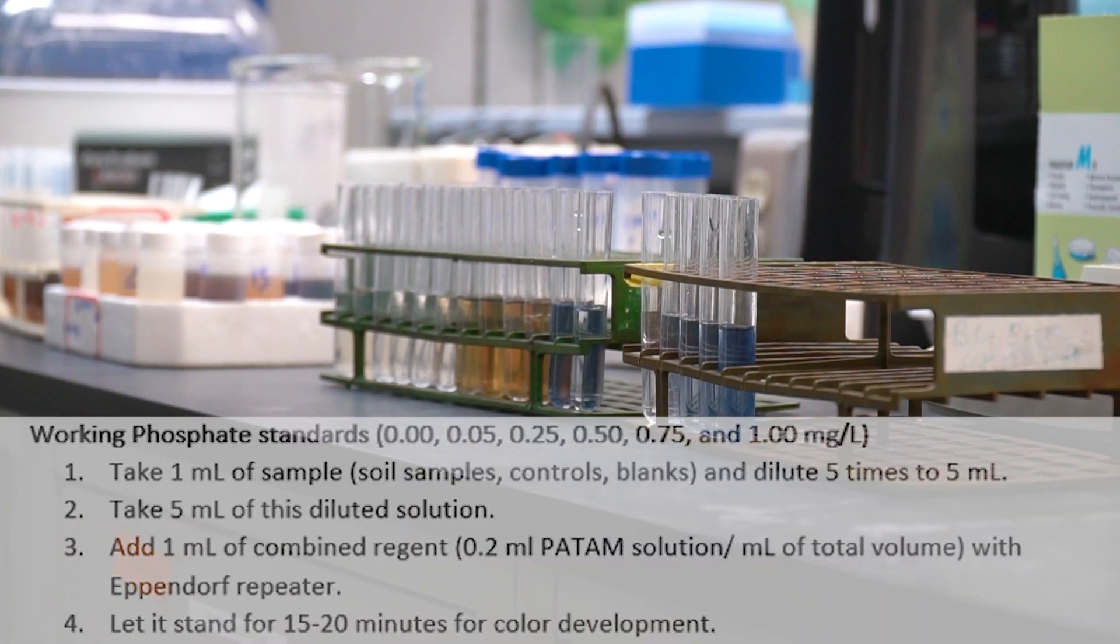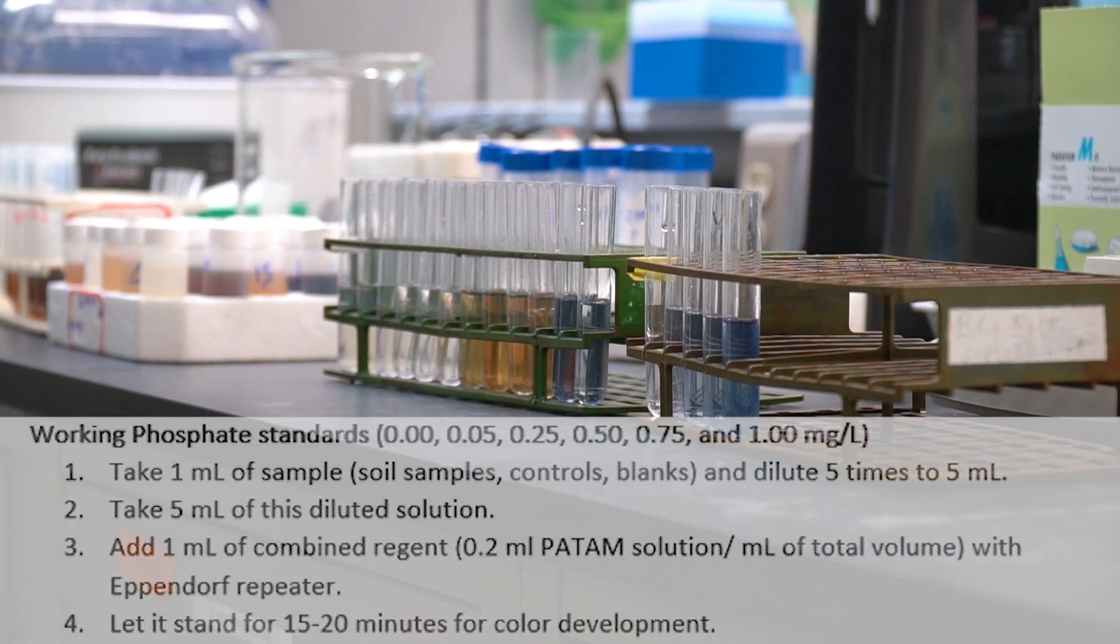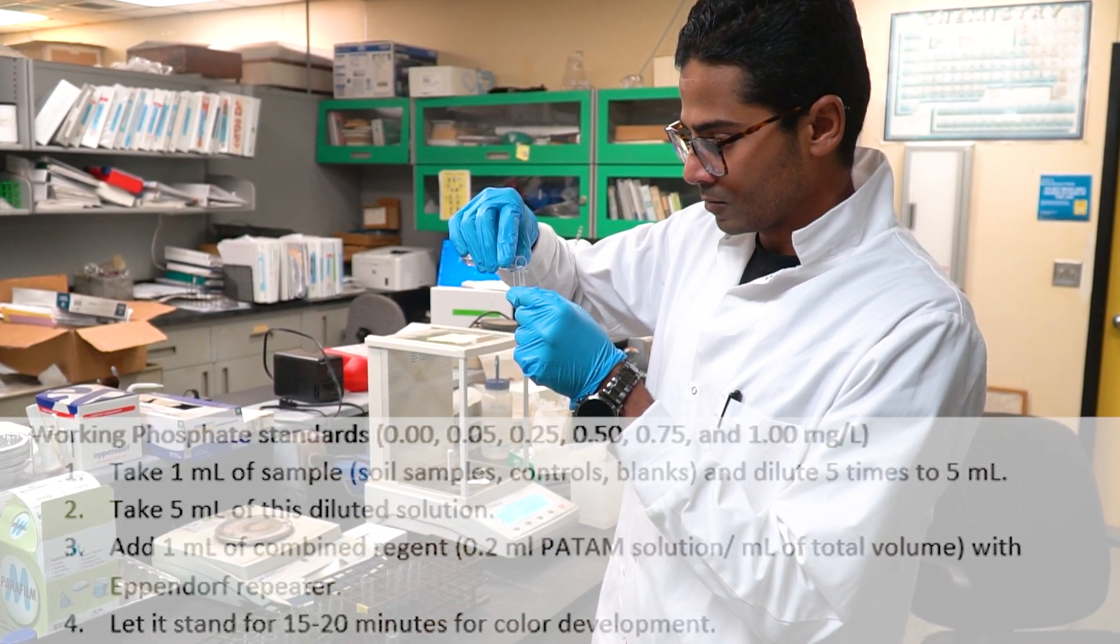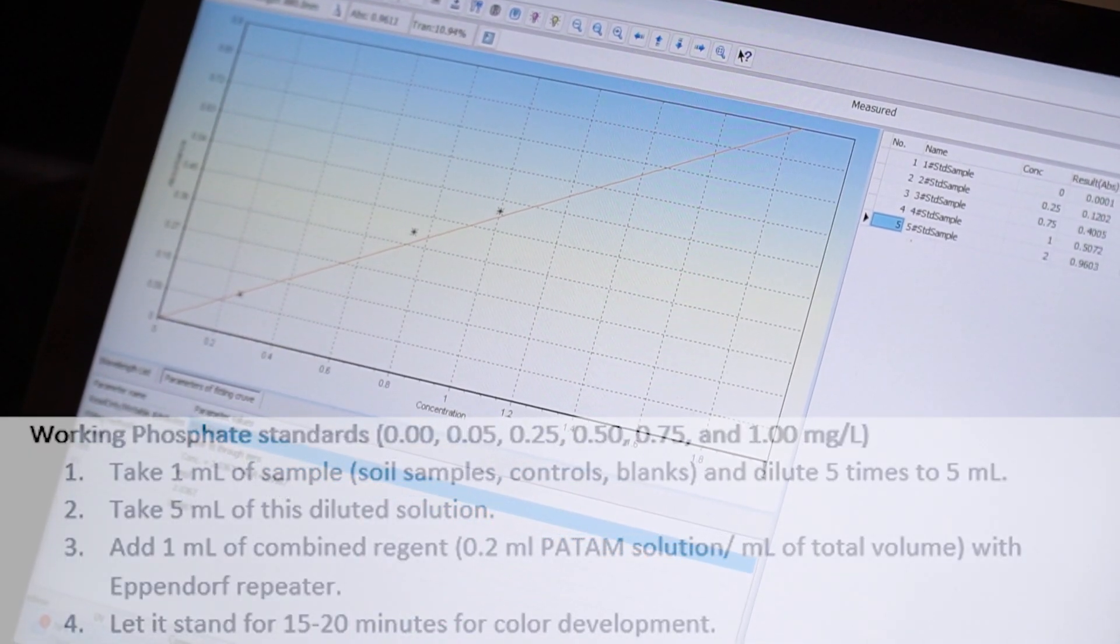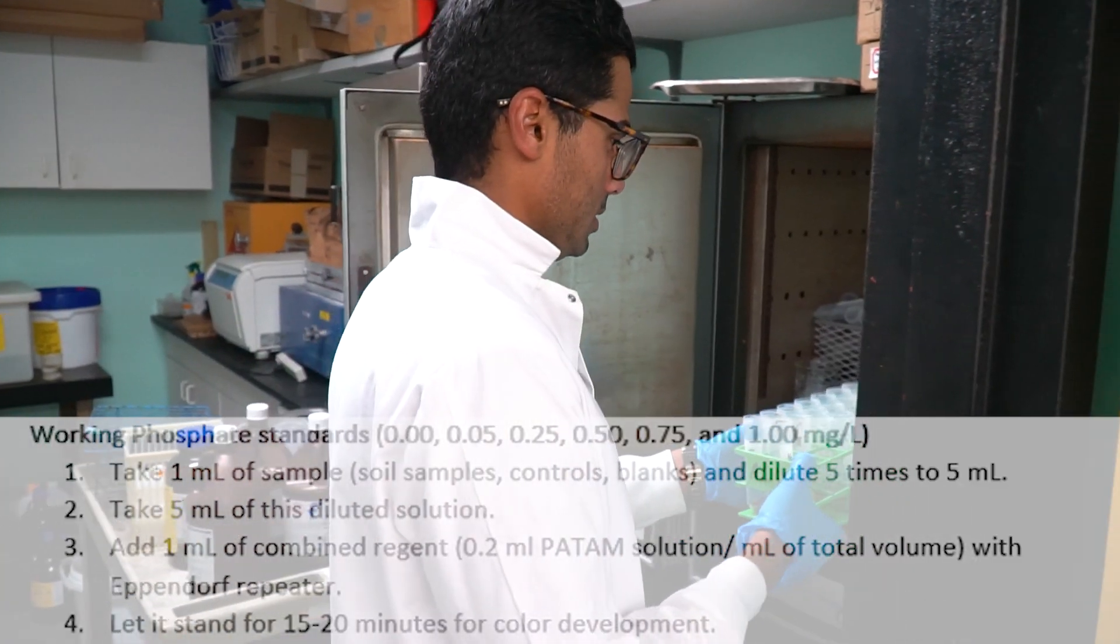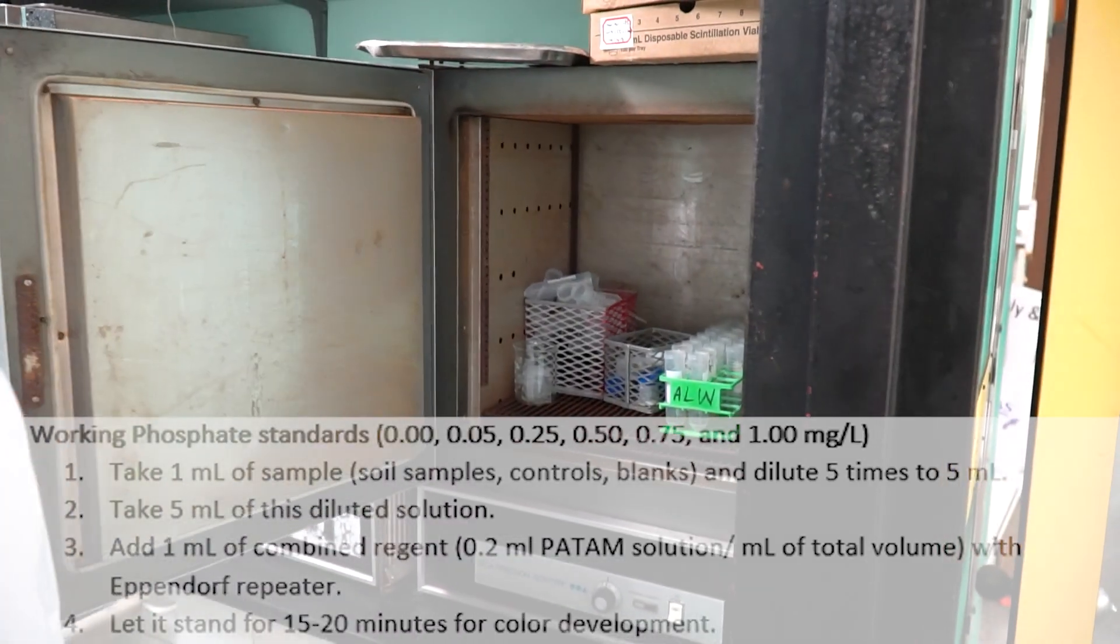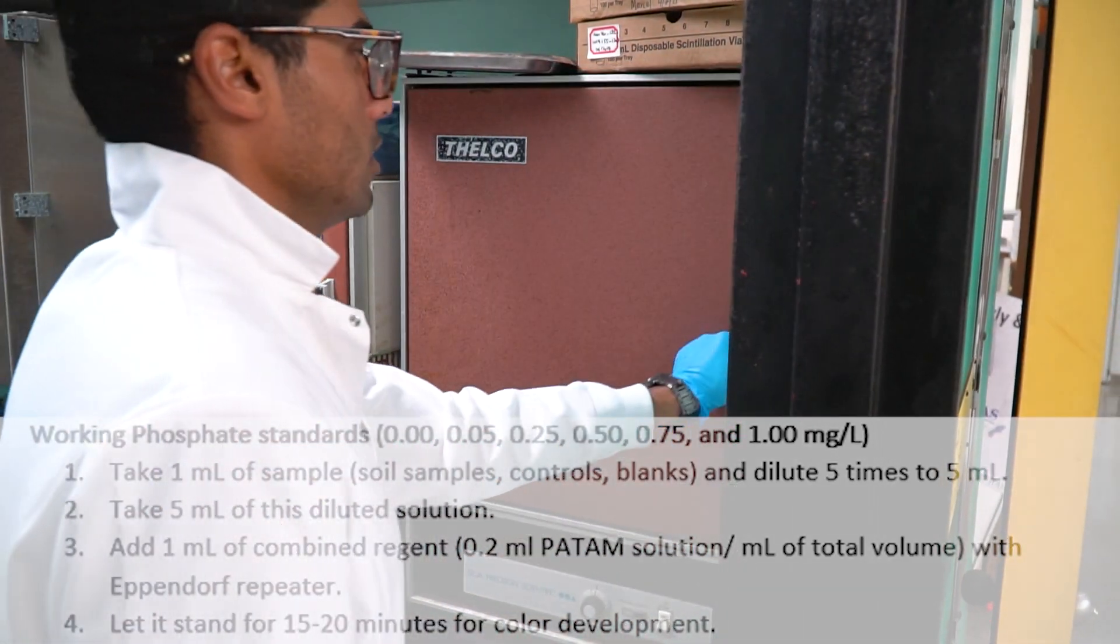After doing all the steps, the dry residues are kept in oven at 60 degrees Celsius to begin the calcium magnesium bound P fractionation. But before that, we have to do humic, fulvic P analyzing using the same samples.